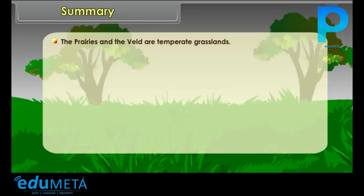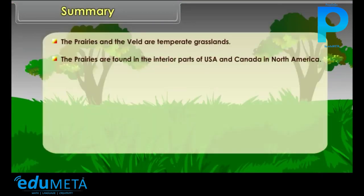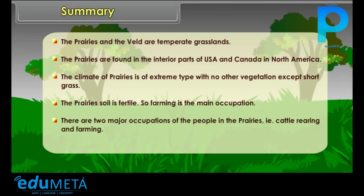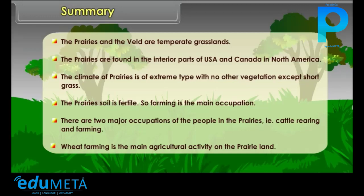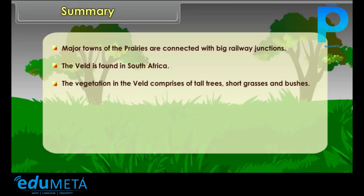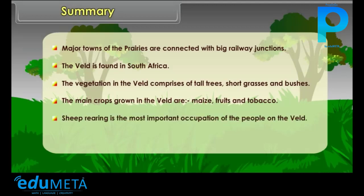Summary: The Prairies and the Veld are temperate grasslands. The Prairies are found in the interior parts of USA and Canada in North America. The climate of Prairies is of extreme type with no other vegetation except short grass. The prairie soil is fertile, so farming is the main occupation, with cattle rearing as the other major occupation. Wheat farming is the main agricultural activity. Major towns are connected with big railway junctions. The Veld is found in South Africa, with vegetation comprising tall grasses, short grasses and bushes. The main crops grown in the Veld are maize, fruits and tobacco. Sheep rearing is the most important occupation of the people in the Veld.